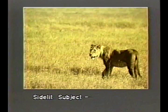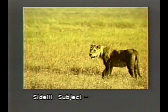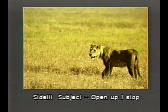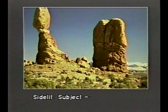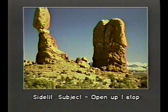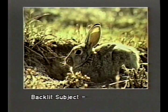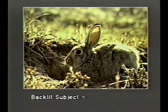Let's look at some examples. Here's a lion photographed in Ngorongoro Crater in Tanzania. What's the exposure? Look at the shadows — this is sunlit, so it's Sunny F-16, open one stop for side lighting. Try this photograph: Balanced Rock in Arches National Park in Utah. The sun is directly to the side, so this is one stop open for side lighting from Sunny F-16 values. Here's a desert cottontail photographed in Wind Cave National Park in South Dakota. The light is coming from directly behind the rabbit — it's bright sunlight back-lighting the subject — so it's two stops open from Sunny F-16 exposure values.